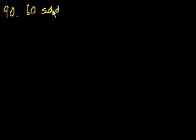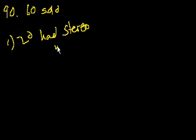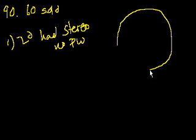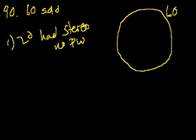Problem 90: How many of the 60 cars sold last month by a certain dealer had neither power windows nor a stereo? Statement 1 tells us of the 60 sold, 20 had a stereo but not power windows. But that alone doesn't tell us how many had neither. Let me draw a Venn diagram. So that's all 60 cars — 20 had stereos with no power windows, which is this portion of the diagram.